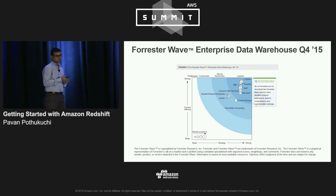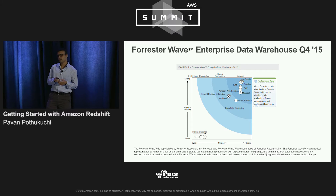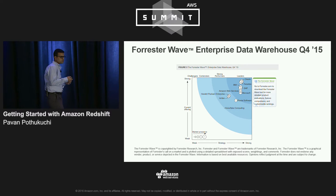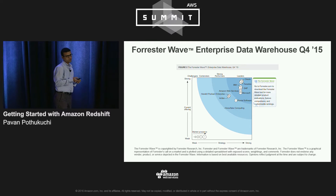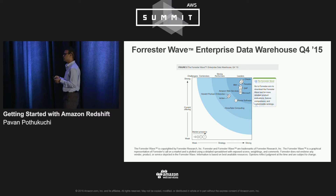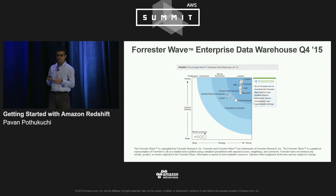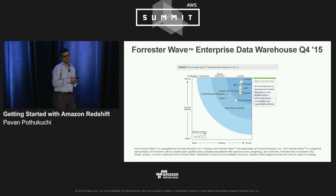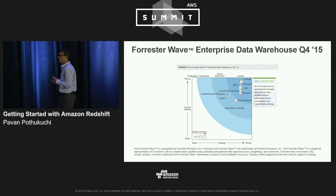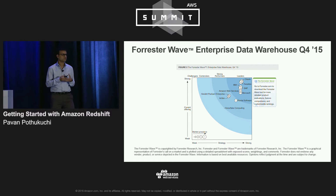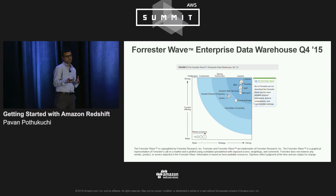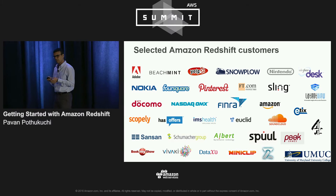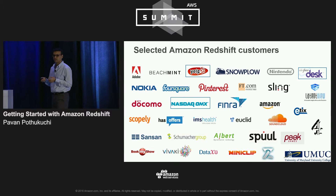This is a quick snapshot of the Forrester Wave, which was released late last year. Redshift has been noted as one of the leaders within the enterprise data warehouse Forrester Wave. Redshift is just about three years old, and given its placement alongside companies that have had data warehousing technologies for decades, we've come a long way in a short time — primarily because of customer momentum, the feature set, and fast-paced feature delivery.